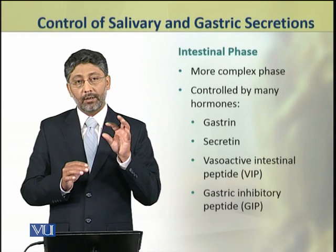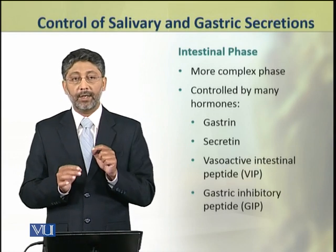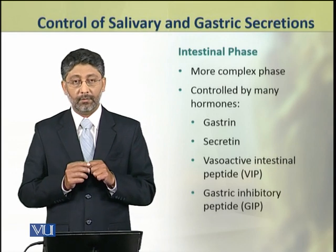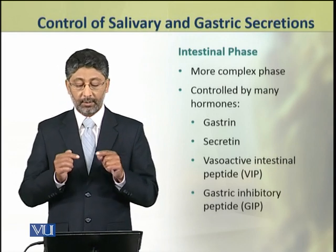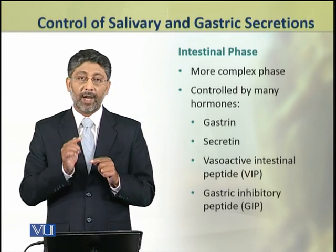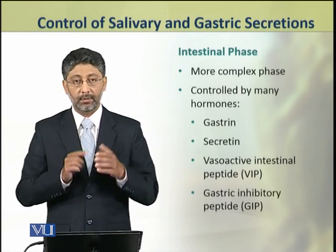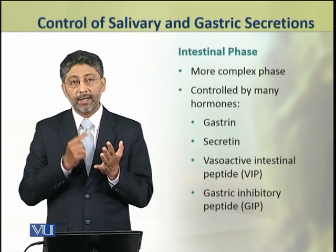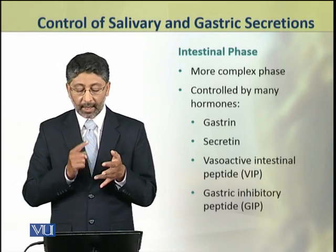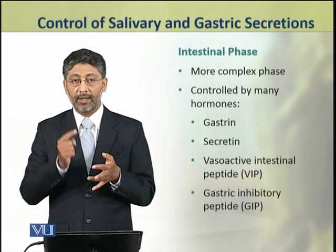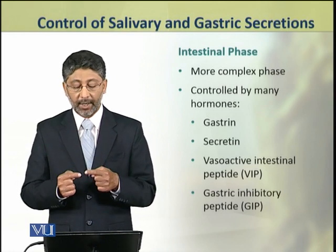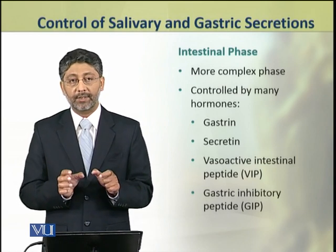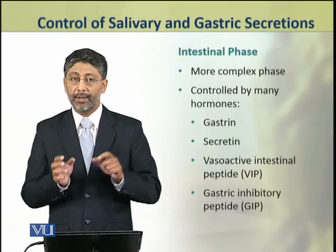The third phase is the intestinal phase of gastric secretion, and it is a more complex phase. It is controlled by many hormones, for example gastrin, secretin, vasoactive intestinal peptide, and gastric inhibitory peptide. All these modulate — either stimulate or inhibit — the secretion of gastric juice in the stomach.